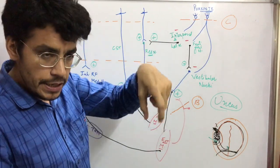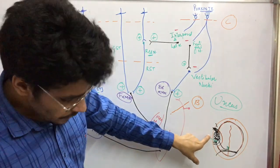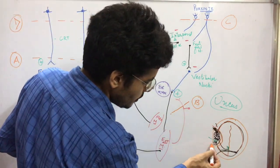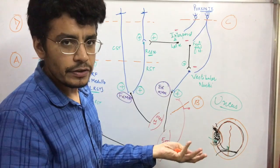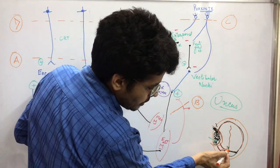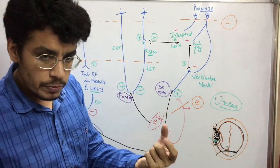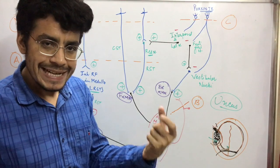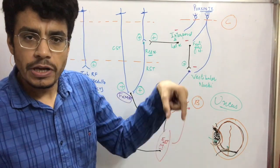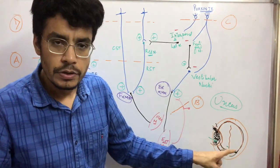The medial part of the temporal lobe is called the uncus. So if there is any hemorrhage due to any injury, or due to any space-occupying lesion, it will compress this part. This medial temporal lobe — the uncus — has the ability to herniate transtentorially, because it has space to move downward. That is called uncal herniation.